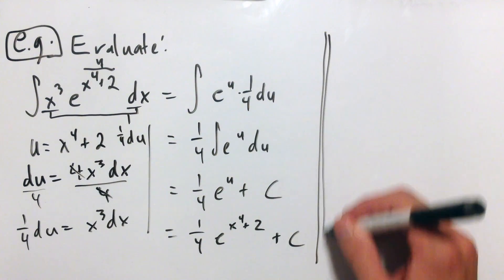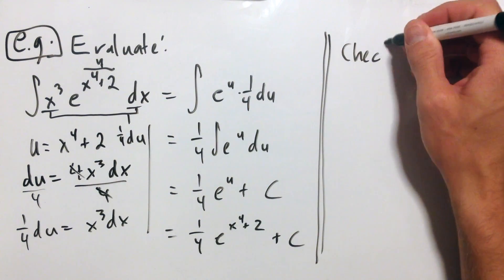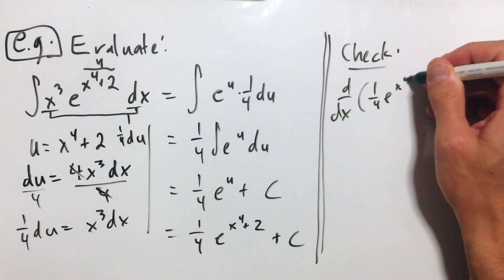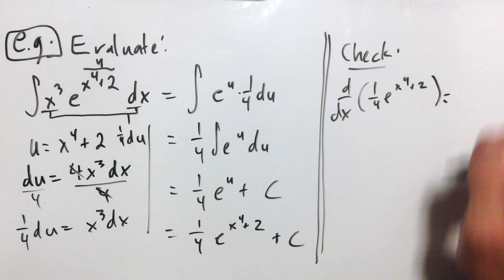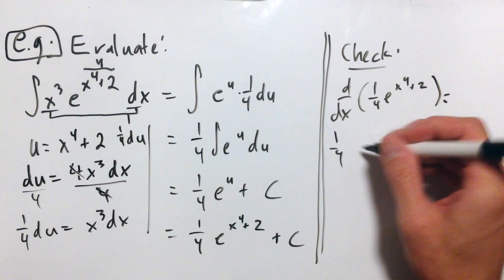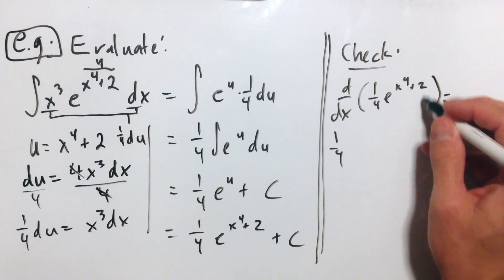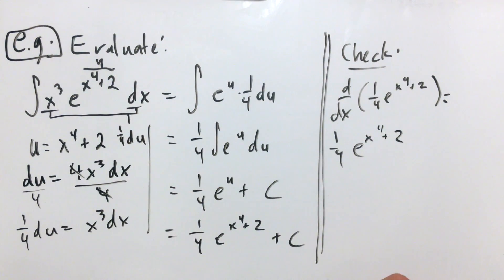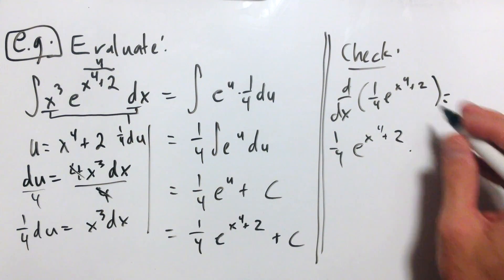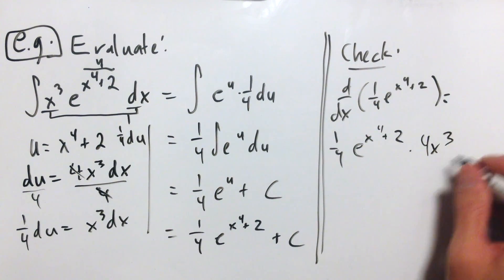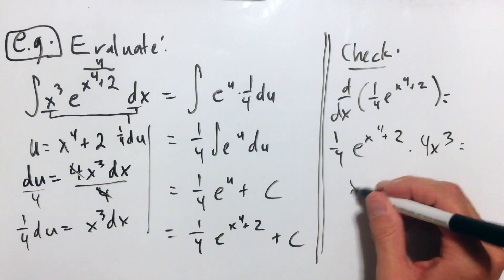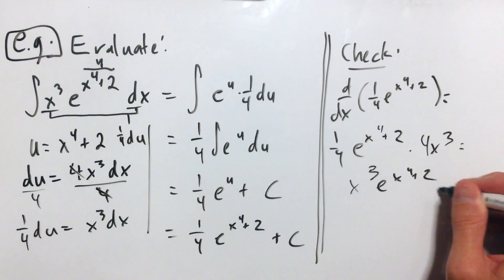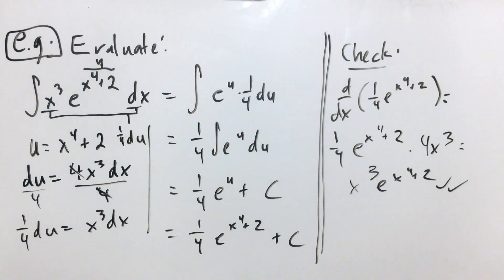Let's check this explicitly. To check our answer, we take the derivative of one quarter e to the x to the fourth plus two. The chain rule says take the derivative of the outside function — the exponential, whose derivative is itself — leave the inside alone, then multiply by the derivative of the inside, which is four x cubed. One quarter and four cancel, giving x cubed times e to the x to the fourth plus two. That's exactly what I started with.